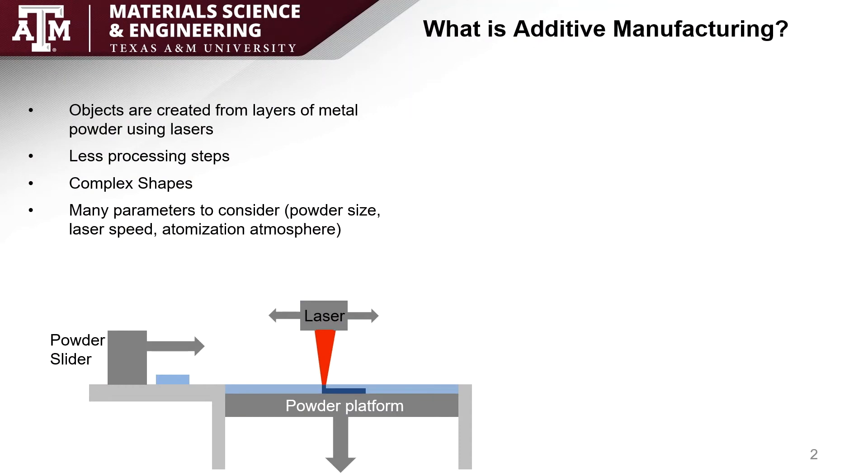First I'm going to talk about what additive manufacturing is. The idea is to create objects by using layers of melted metal powder stacked on top of each other. Some benefits to this is you'll have less processing steps because you can print the entire piece rather than having to create separate parts and then weld them together.